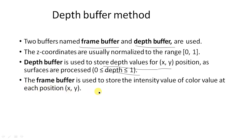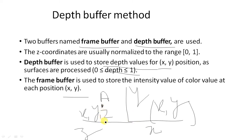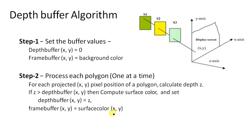The frame buffer stores the intensity or color value at position X and Y after converting the three-dimensional object to a two-dimensional object. Now, this is the working of the depth buffer algorithm. We use two data structures: the depth buffer, which stores the value of Z, and the frame buffer, which stores the intensity value of each XY position.